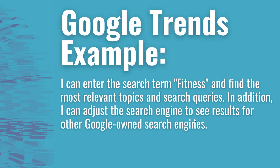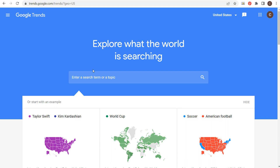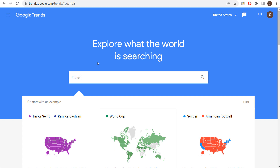Let's use this tool for a minute just to show what we can do. I can enter the search term 'fitness' and find all of the most relevant topics and search queries. You can also adjust the search engine to see results for other Google-owned search engines. Let's come over here to Google Trends and enter 'fitness'.